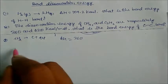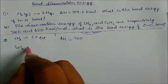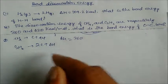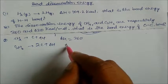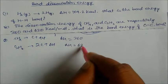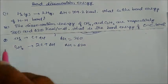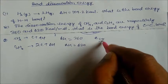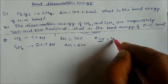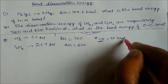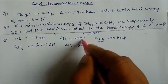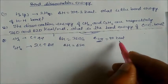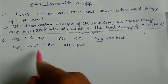Delta H for CH₄ is 360, and C₂H₆ converts into 2 carbon plus 6 hydrogen with delta H of 620. For the C-H bond energy: 360 divided by 4 (since CH₄ has 4 C-H bonds) gives 90 kilocalorie.